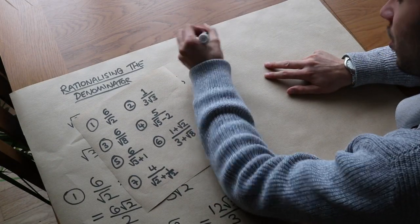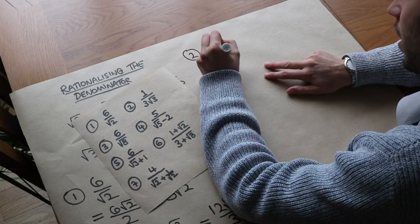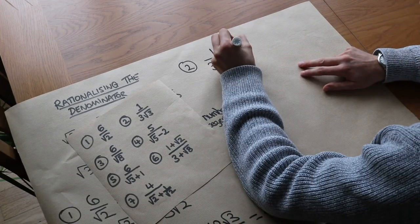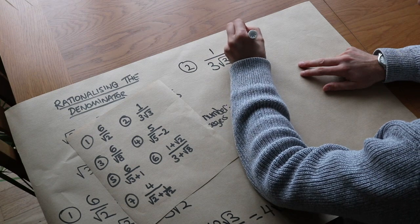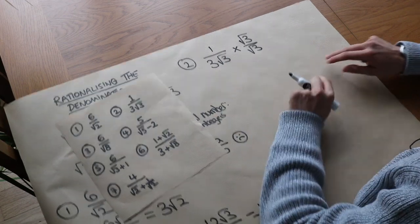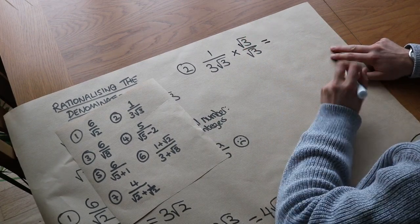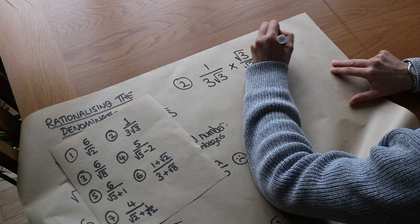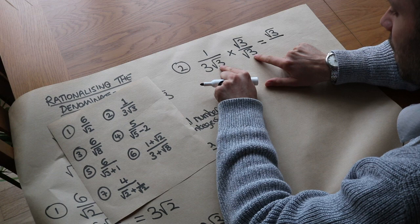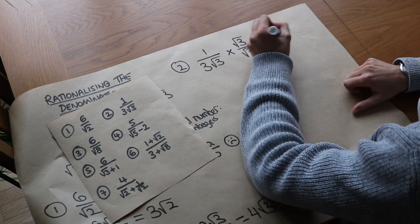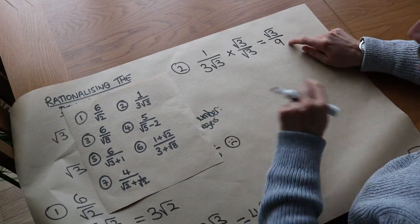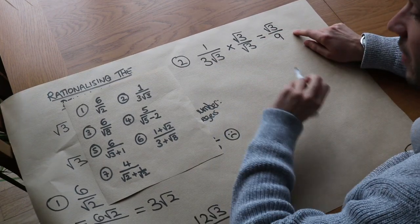Question 2: 1 over 3 root 3. Whatever surd we have at the bottom, we multiply top and bottom by that surd, so we multiply by root 3. We don't need to multiply by the 3 as well — just whatever surd is there. The top becomes 1 times root 3 which is root 3, and the bottom: root 3 times root 3 is 3, but multiplied by the existing 3, we get 9. So we get root 3 over 9, and the denominator is no longer a surd.